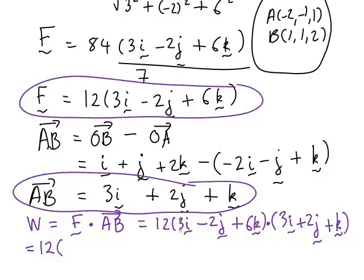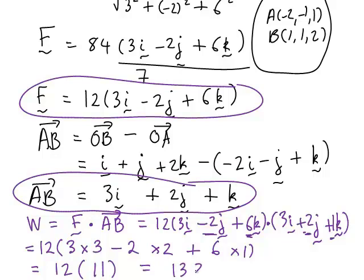Well, it's the coefficient of the i's first of all. So we had 3i, 3i, so that will be 3 times 3. Then plus the coefficient of the j's, plus negative 2 times 2, and plus a negative will just become a negative. So that becomes minus 2 times 2. And then multiplying the coefficients of the k components together, which was 6k and 1k, so plus 6 times 1. Working that out, 12 times (9 minus 4 is 5, plus 6 is 11). So 12 times 11, which works out to be 132. And we saw that because force was measured in newtons and displacement in metres, work will be in joules. So the work done in this case was 132 joules.